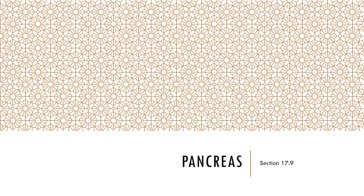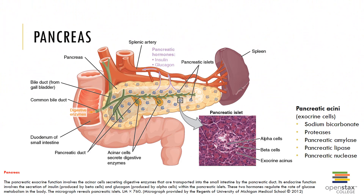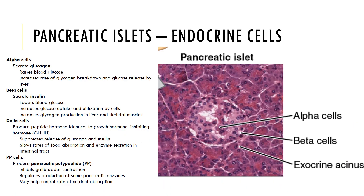The pancreas is located posterior and inferior to the stomach and is a unique organ with both endocrine and exocrine ability. The islets of Langerhans are the endocrine cells of the pancreas.